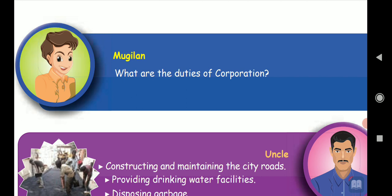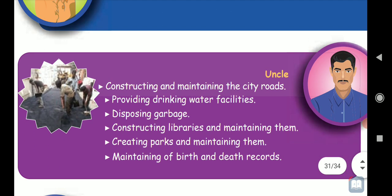So, Mughilan asks the question to his uncle: what are the duties of corporations? Then uncle says: constructing and maintaining the city roads. Corporation means that is a city area — the biggest area, because there is more than one lakh population. That is the first duty. Next, providing drinking water facility.